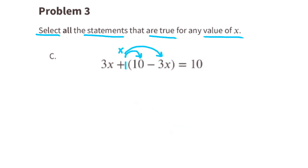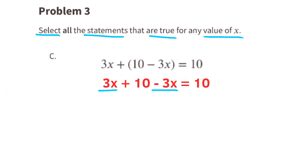Option C: a positive times a positive is a positive, and a positive times a negative is a negative. So on the left side of the equal sign, it reads 3x plus 10 minus 3x. The 3x minus 3x cancels each other out, and we're left with 10 on the left side and 10 on the right side. That means this statement is true, because 10 equals 10.